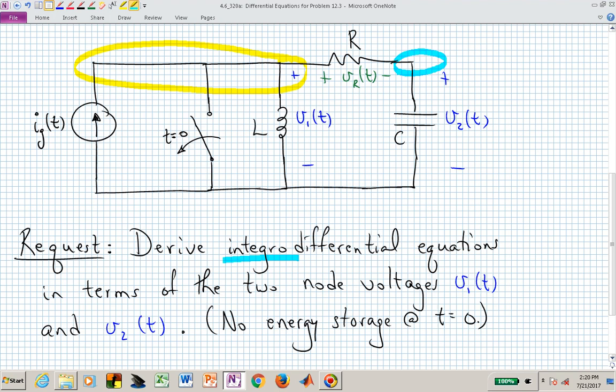We then want our eventual differential equations, or in this case, integral differential equations, since we will probably have an integrator involved, since we're wanting the voltage across an inductor. Typically, we would write these equations in terms of inductor currents and capacitor voltages. But in this particular problem, they say derive the equations in terms of the two node voltages, V sub 1 of t and V sub 2 of t.